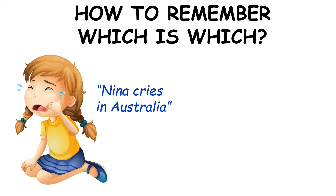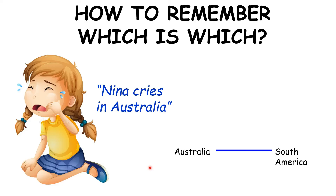How can you remember in a GCSE exam which one is El Niño and which one is La Niña? Imagine a girl named Nina, and imagine she cries every time she goes to Australia — so Nina cries in Australia. By crying we actually mean the rain, and by Nina we actually mean La Niña. So if you remember that La Niña means rain in Australia, you can remember the whole cycle.